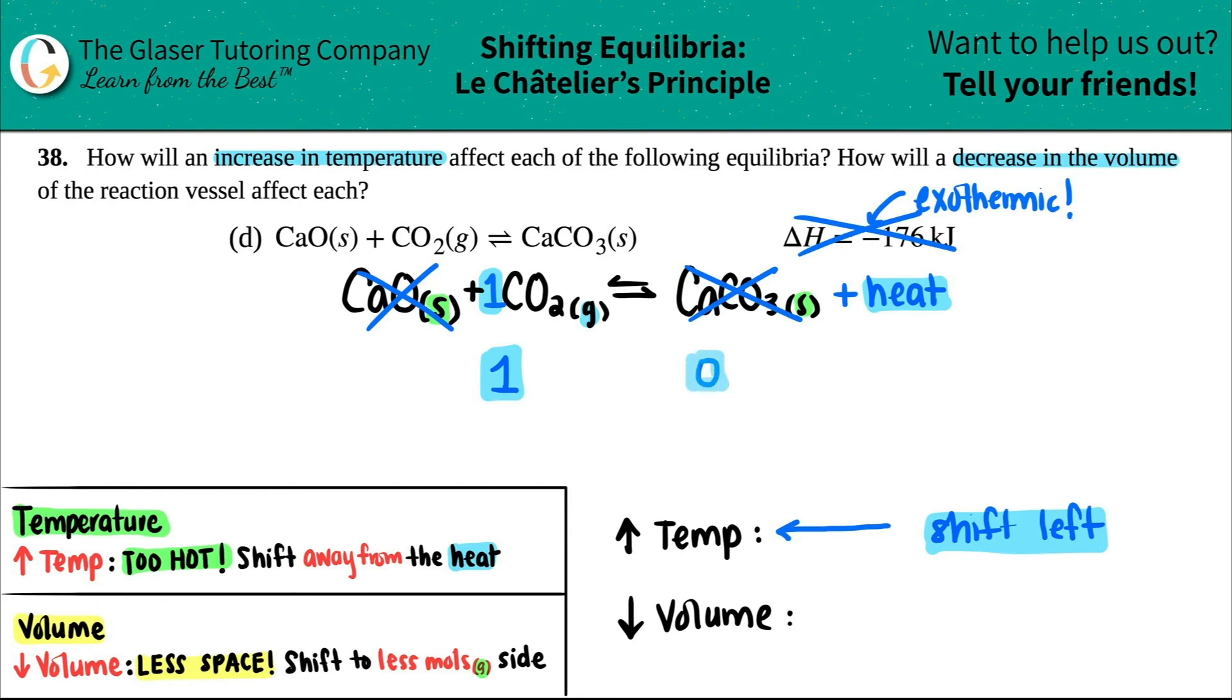I'm going to put a zero. If you decrease the volume, you shift to the side with less moles of gas. Which number is lower? Zero. So I'm going to be going towards that lower number. In this case I will shift to the opposite side—I'll shift right. And that is your final answer.